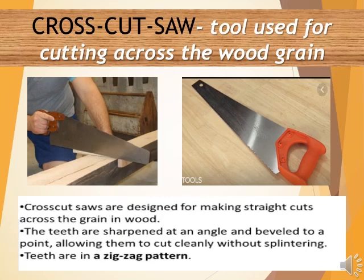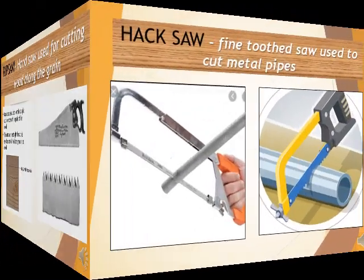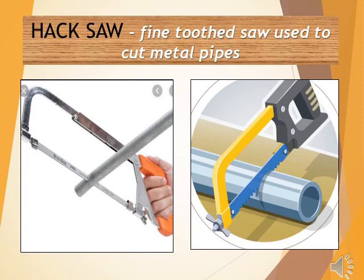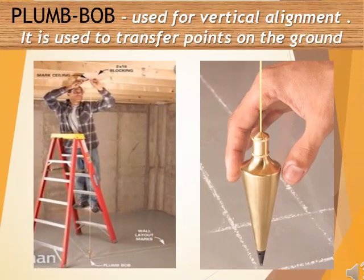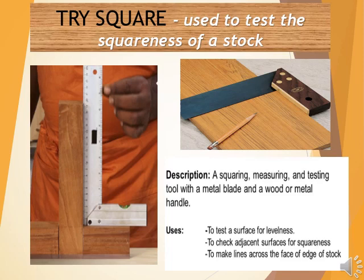The teeth of the crosscut saw are in a zigzag pattern. The rip saw is a hand saw used for cutting wood along the grain; it is a coarse-tooth saw used to make straight cuts in lumber with the grain of the wood, with teeth in a straight line so the saw does not drift with the grain. The hacksaw is a fine-tooth saw used to cut metal pipes. The plumb bob is used for vertical alignment and to transfer points on the ground.